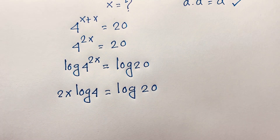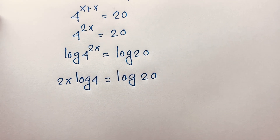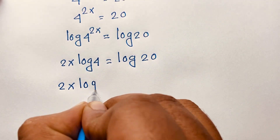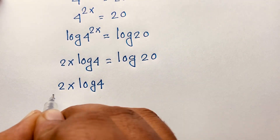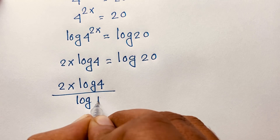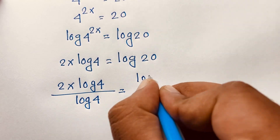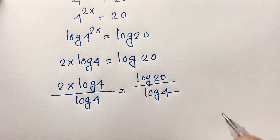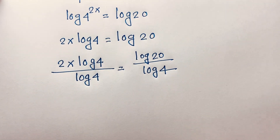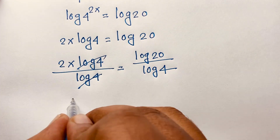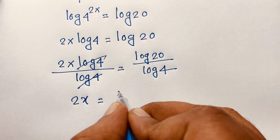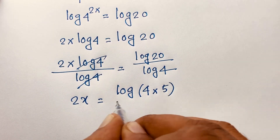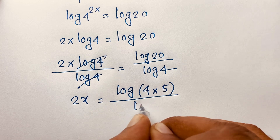Then I divide both sides by log 4. So this expression becomes 2x times log 4 over log 4 is equal to log 20 over log 4. The log 4 cancels, and we find out 2x is equal to log 20 over log 4.